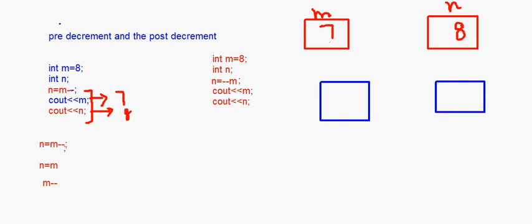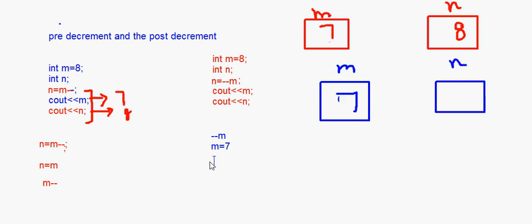For the pre-decrement case, n = --m: the initial value of m is still 8. Since this is a pre-decrement, --m is done first, so m becomes 7. Then n = m means n also becomes 7. So when you print m and n, both will print 7.